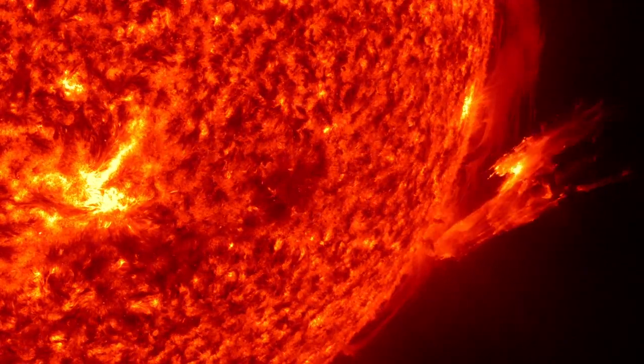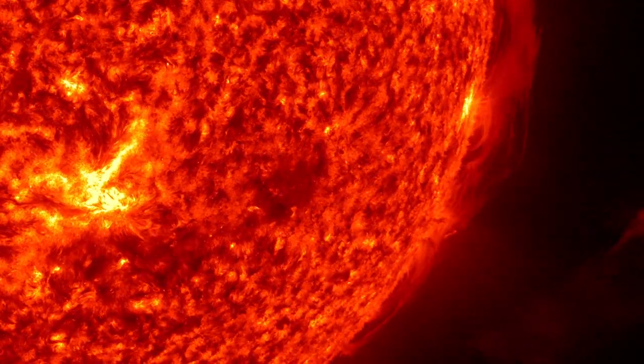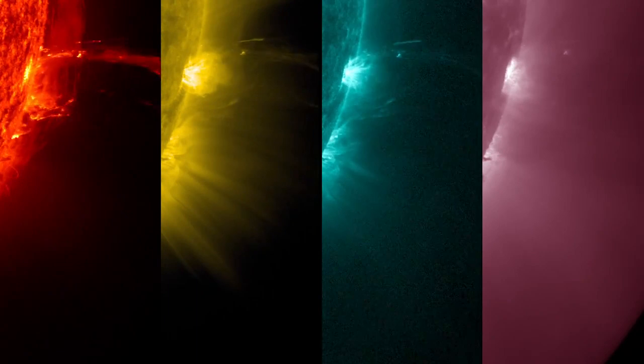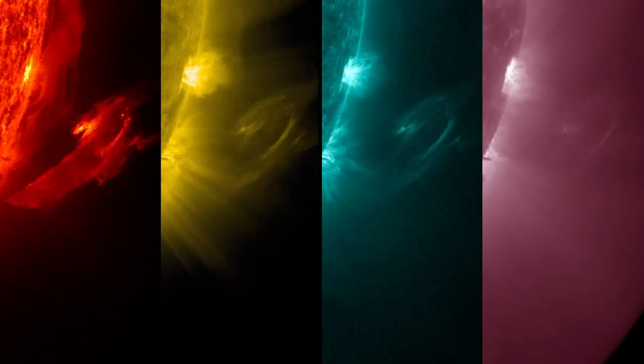The incredibly high-resolution view of the Sun provided by NASA's Solar Dynamics Observatory, or SDO, revealed the beginning of the eruption in several different wavelengths of ultraviolet light.